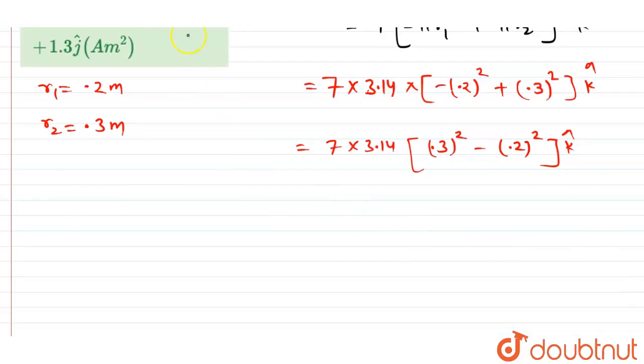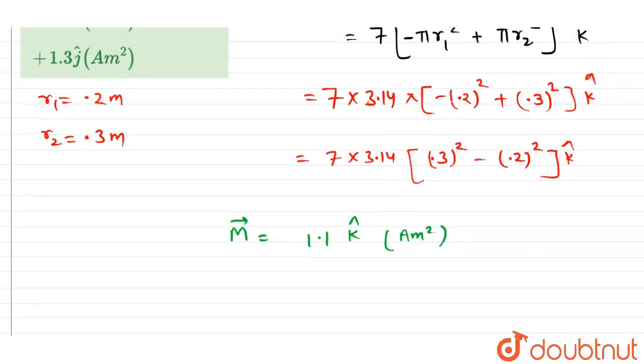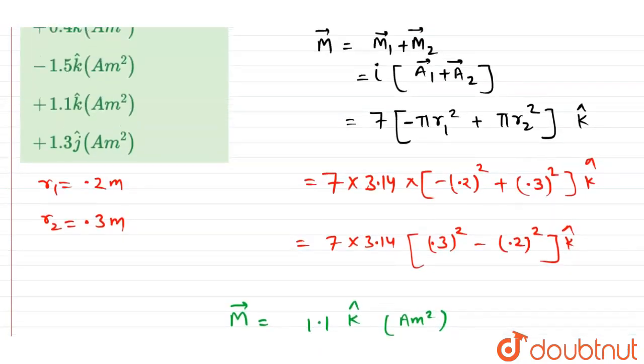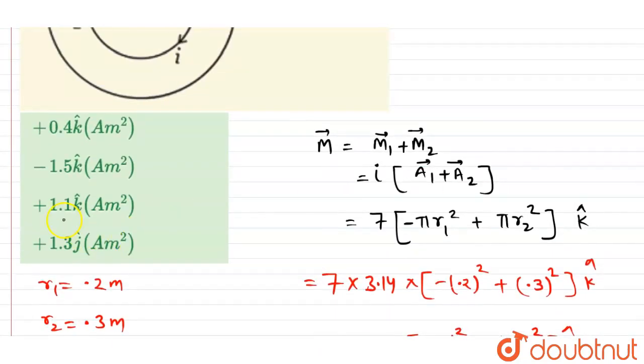Now we can easily solve it, and finally we will get our answer for the magnetic moment. The net magnetic moment due to both loops is 1.1 in the k-hat direction, ampere meter squared. Now let's check the options. According to it, 1.1 k-hat ampere meter squared, this option is correct.